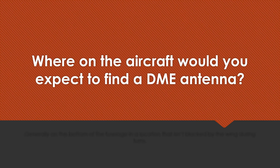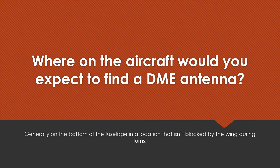Where on the aircraft would you expect to find a DME antenna? Generally, it's on the bottom of the fuselage in a location that is not blocked by the wings during turns.